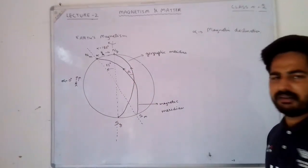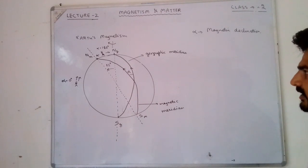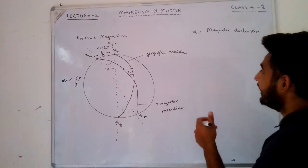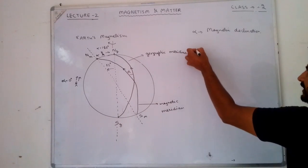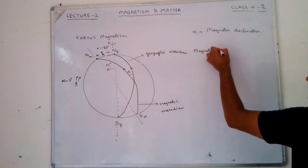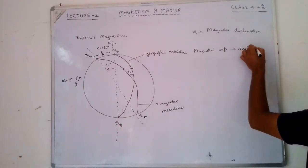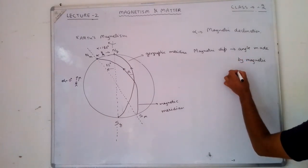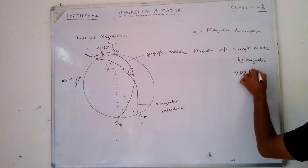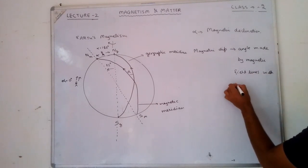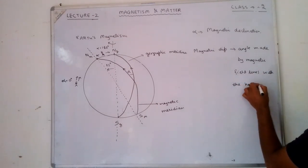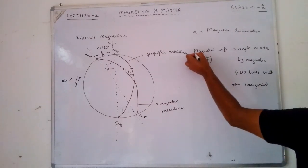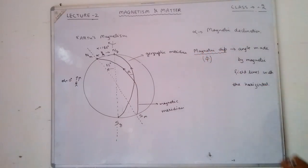Since the axes are tilted towards each other at roughly 12–13 degrees, declination varies by location. Apart from that, there is another angle called magnetic dip — the angle made by magnetic field lines with the horizontal. That angle is called magnetic dip.